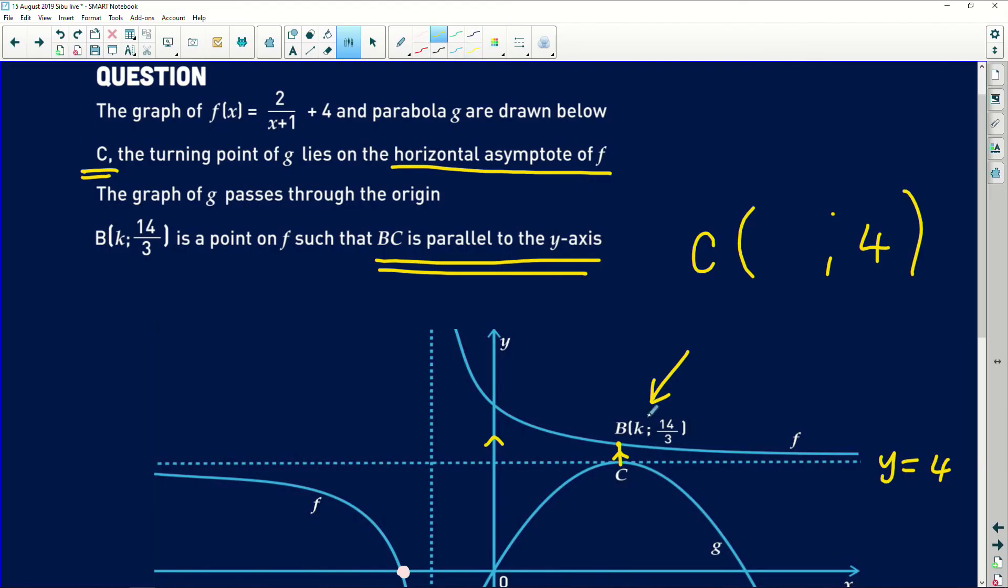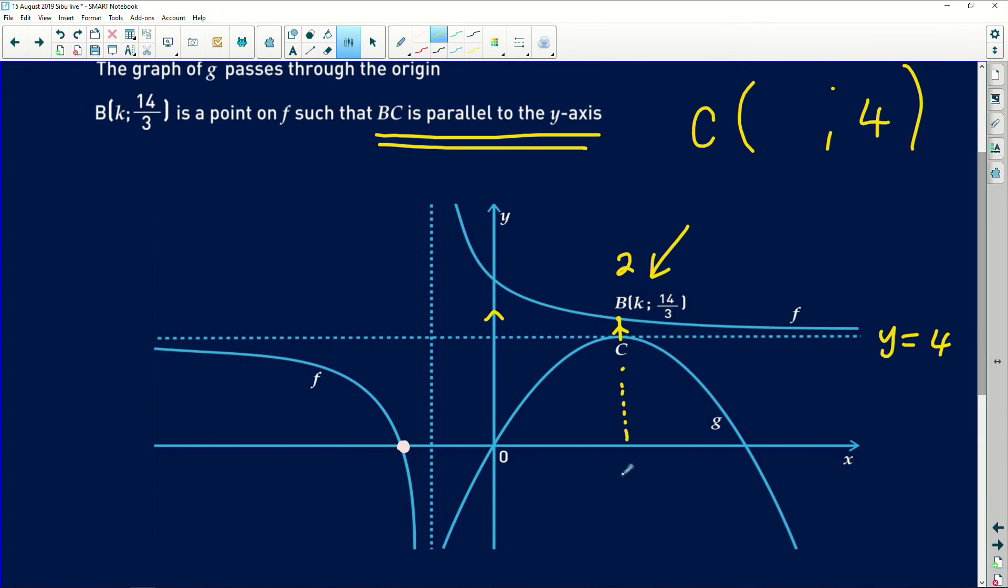Because the x value is not changing since that line is parallel to the y axis. And that is the strategy that we are going to engage in this particular instance to answer the question. So our k value came out as 2 from the previous question. So it means c also has a value of 2. Its x value will always be 2. So at c, the x value is simply going to be 2. So those are the coordinates of the point c.